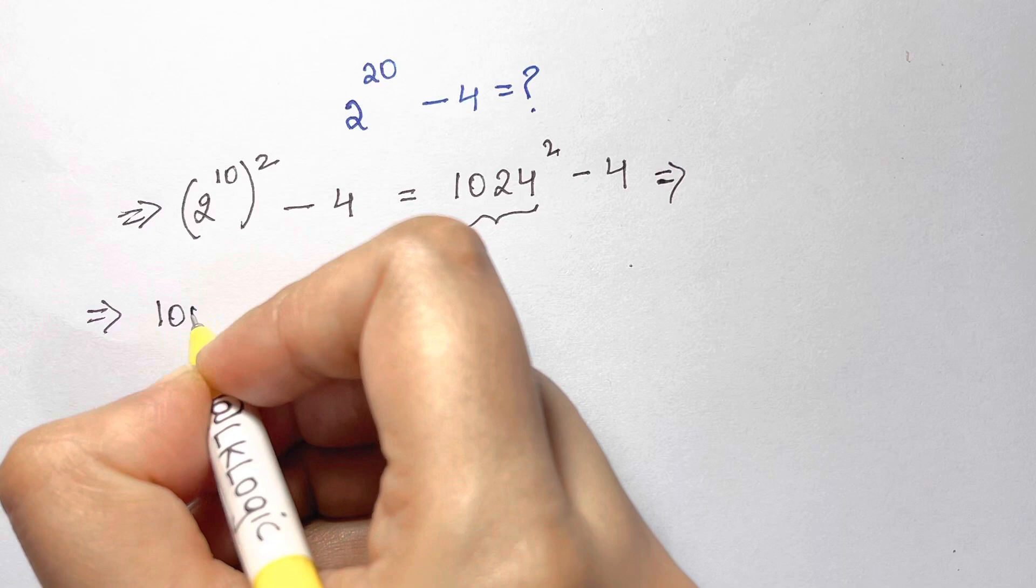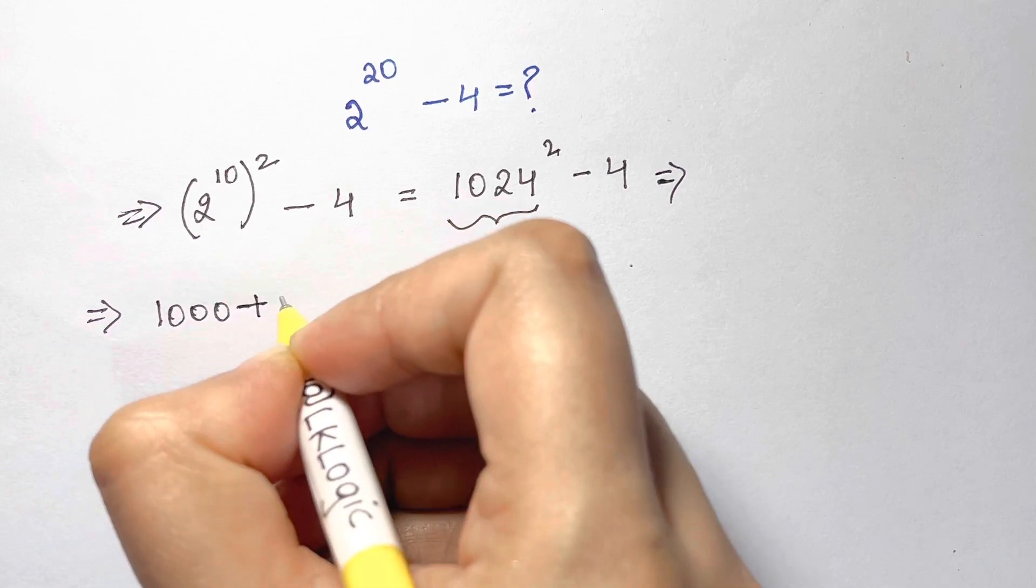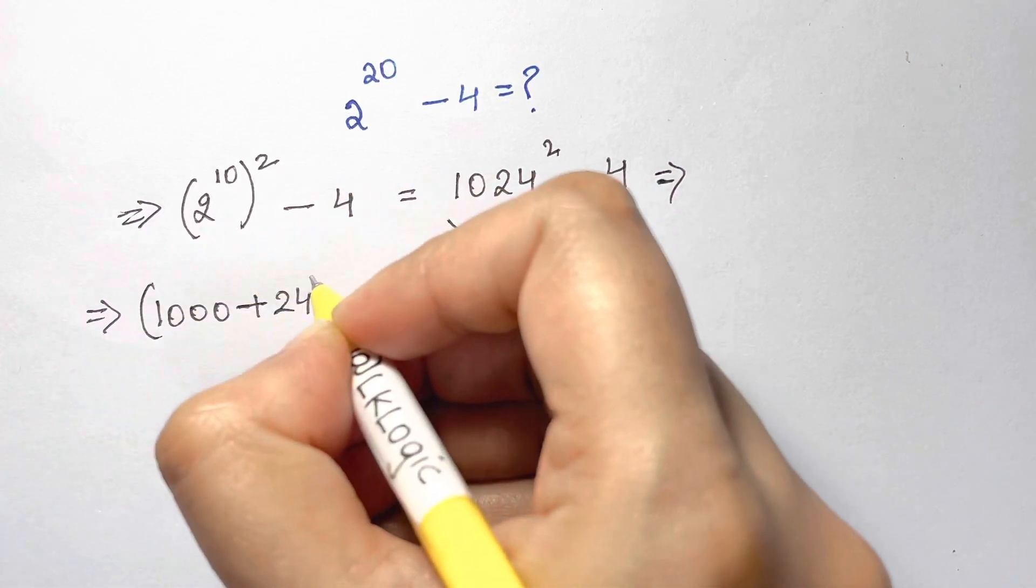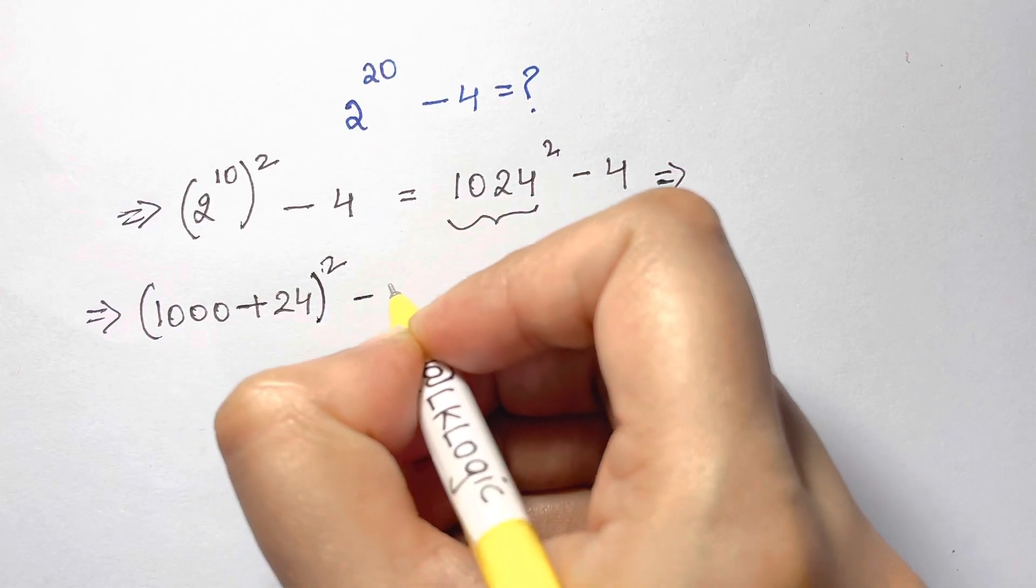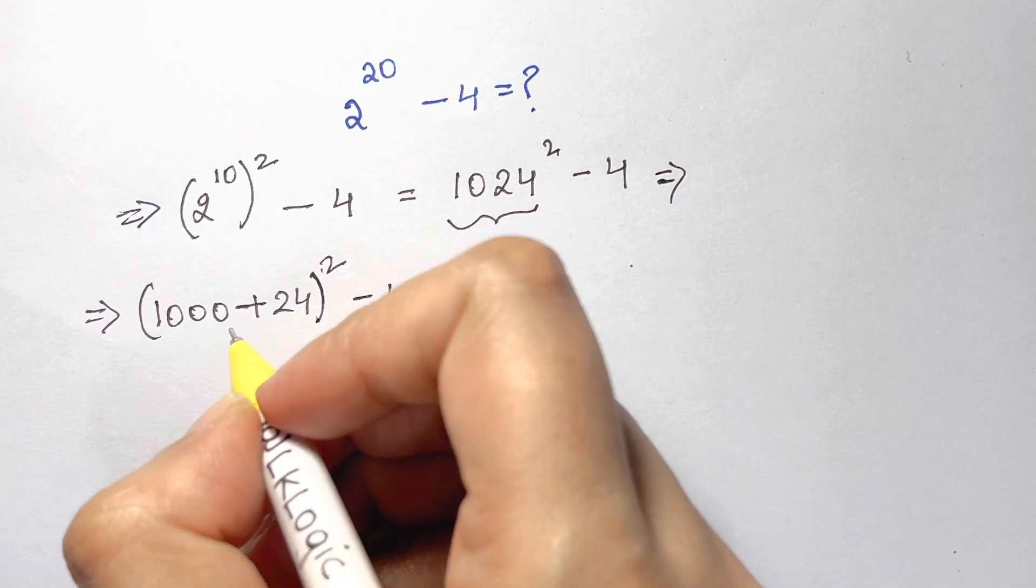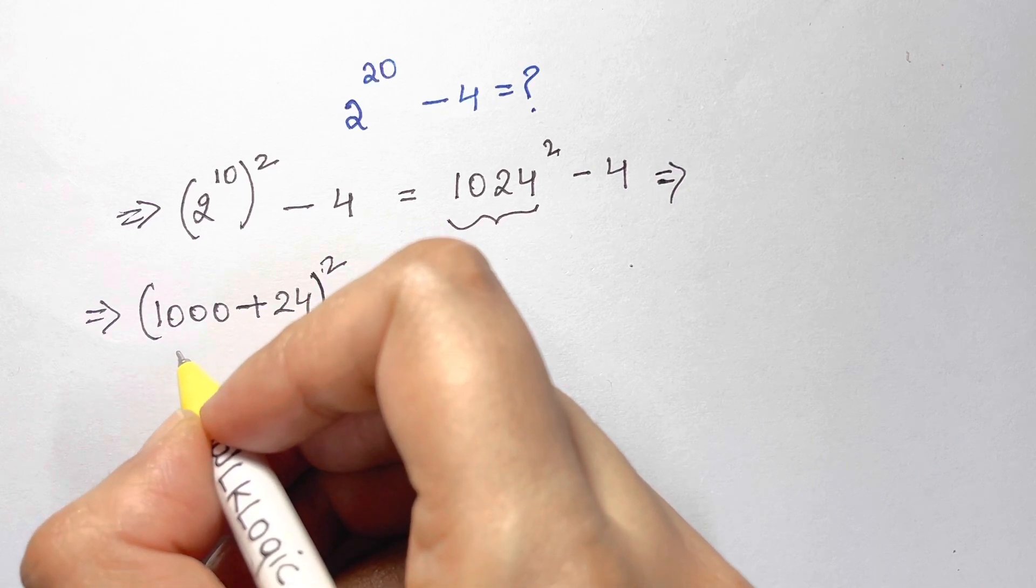Now as you can see, this 1024 can be written as 1000 plus 24, the whole squared, minus 4.